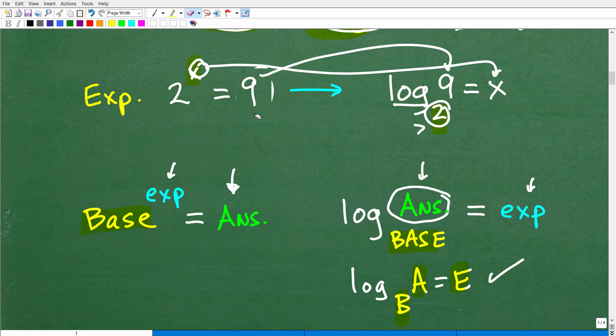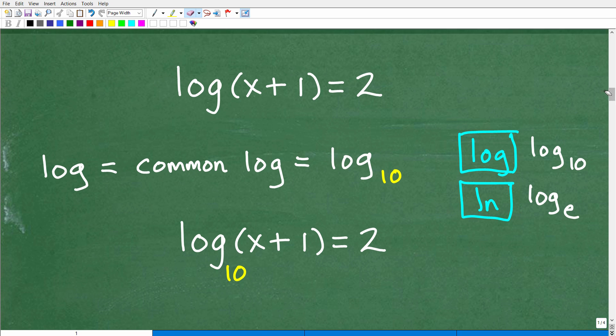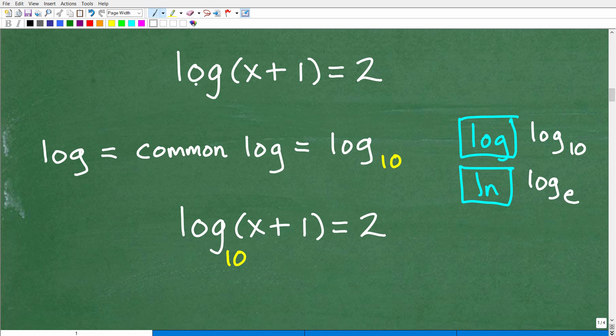So again, I need to understand that we can write a logarithm as an exponential function and vice versa. So now that is going to be the key to figuring this out. So here's our problem. There's one little tiny detail we have to address. We have log and then we have x plus 1 is equal to 2. So some of you might be saying, well, hey, Mr. YouTube math man, I don't see a little number down here. So you taught me all this stuff, but where's the little number? Because that little number is the base, right?